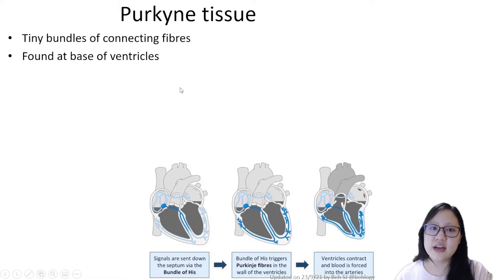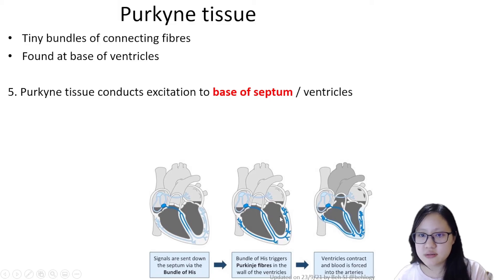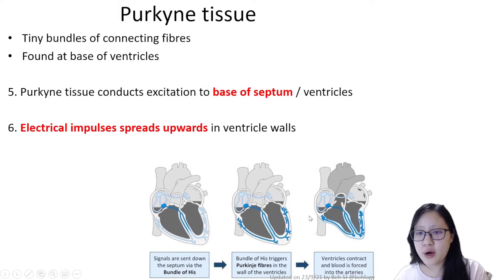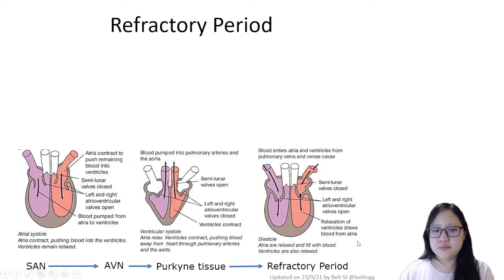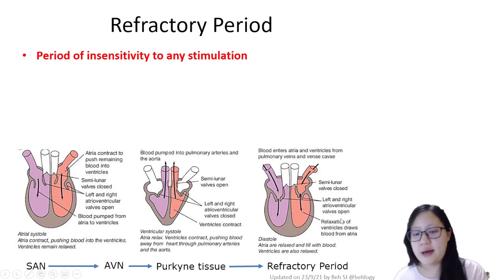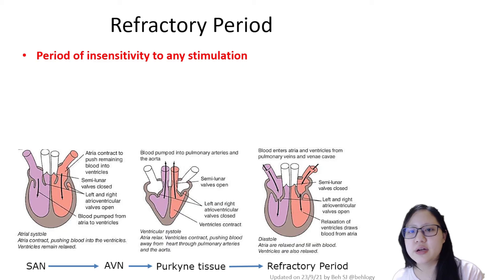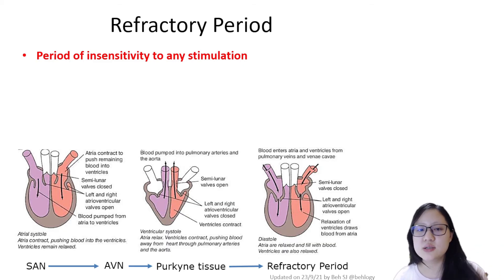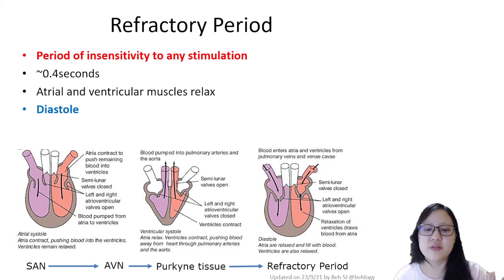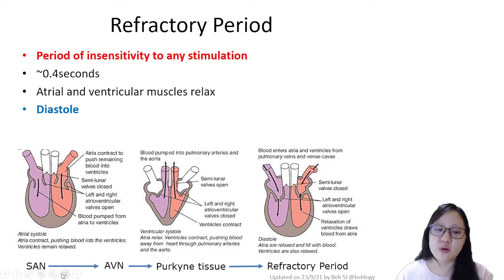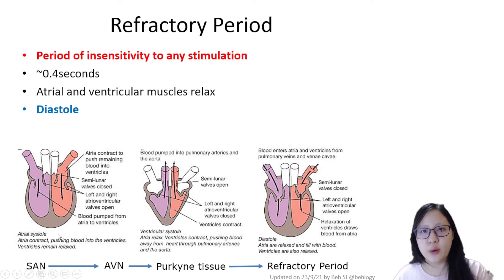The Purkinje tissue consists of tiny bundles of connecting fibers found at the base of the ventricles, and electrical impulses spread upwards through the ventricle walls. Right after all electrical impulses are sent through the Purkinje tissue, there is a refractory period — a period of insensitivity to any stimulation — during which diastole occurs, lasting around 0.4 seconds. There are no electrical impulses traveling in any of those nervous tissues. After 0.4 seconds, the sinoatrial node initiates the first wave of excitation again, and the cardiac cycle repeats.